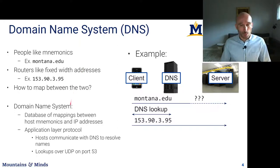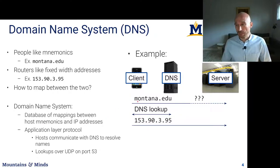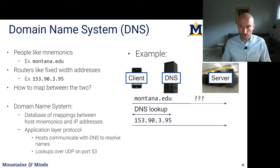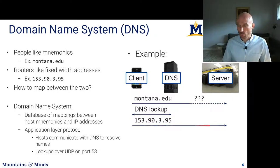The Domain Name System is a mapping between host mnemonics and IP addresses. For example, if you want to send a message to montana.edu, your client will contact the local DNS server in your ISP's network, and that DNS server will do the lookup to tell you the IP address is 153.90.3.95, and now your client can send IP packets to that address.